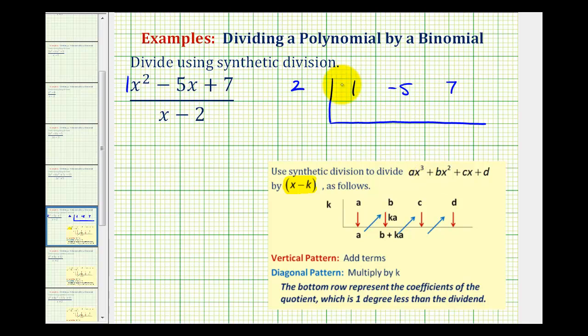Now to start dividing, we'll start by bringing this first term down. Then every time we have a term down here, we're going to multiply it by k, or in this case two, and then move it to the next column. Since one times two is equal to two, we'll put a two here.